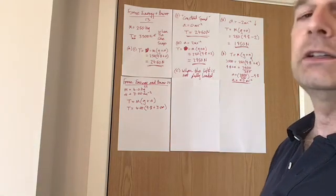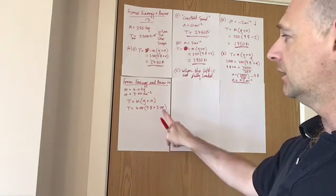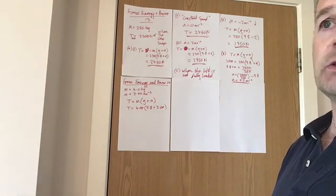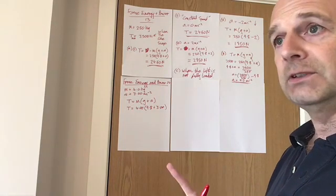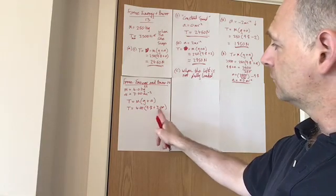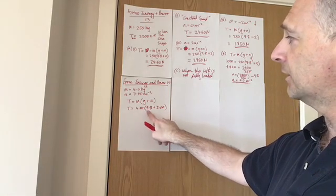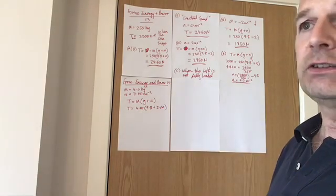And in the wording of the question, it says 3.00 metres per second squared. The 3.00 has two significant figures in it. The 3 has only one significant figure in it. So, I'm going to use this one because that means we've got two significant figures there, two significant figures there, two significant figures there.